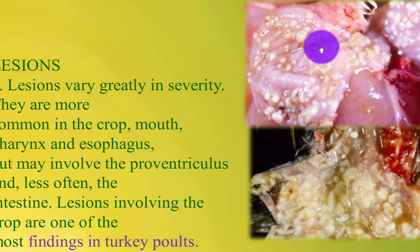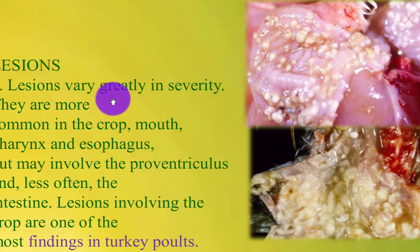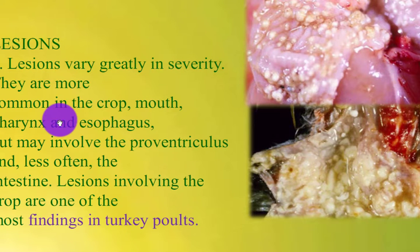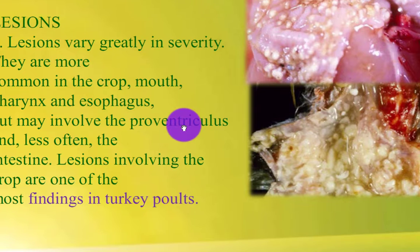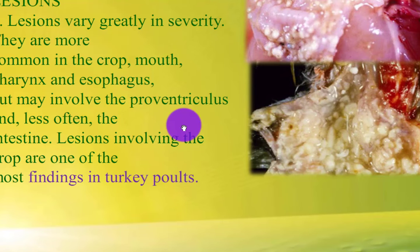Lesions vary greatly in severity. They are more common in the crop, mouth, pharynx, and esophagus, but may involve the proventriculus and, less often, the intestine. Lesions involving the crop are one of the most common findings.